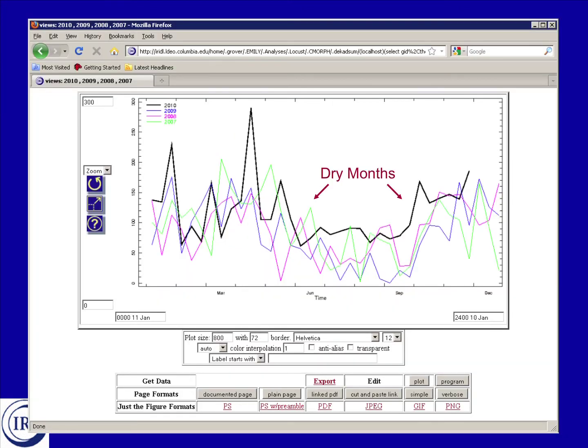This time series is showing you precipitation over the calendar year for the current year, which is in black, 2010, compared to other recent years. In this case, 2009 is in blue, 2008 is in pink, and 2007 is in green.